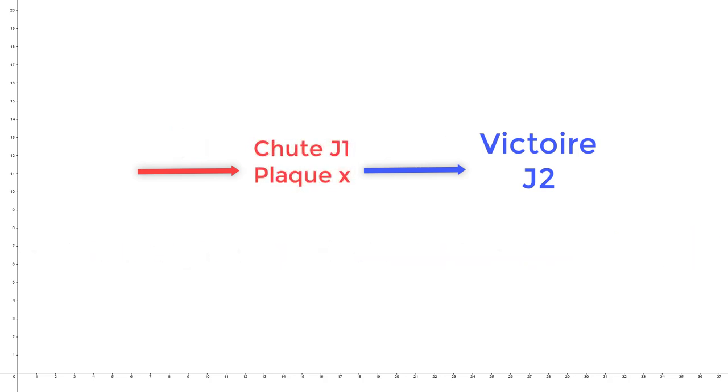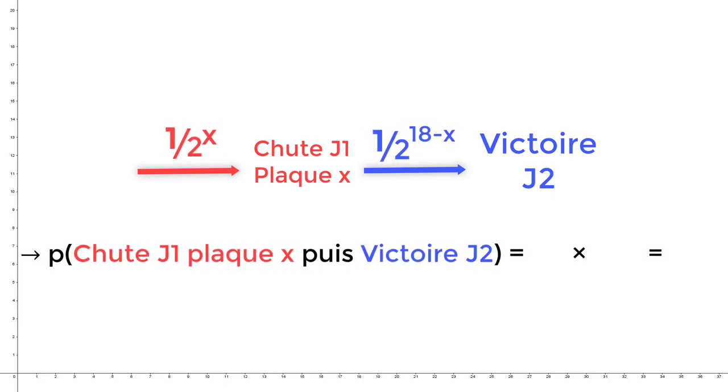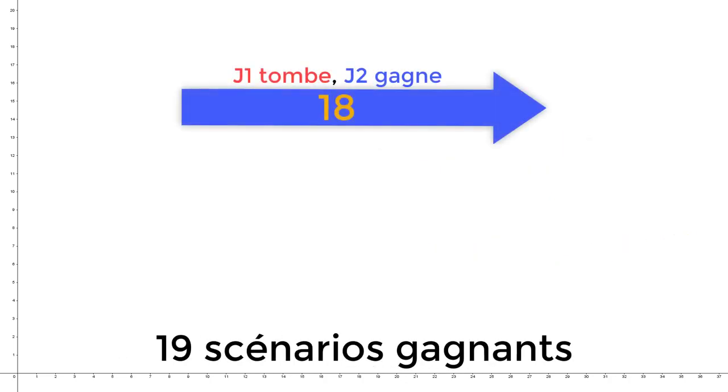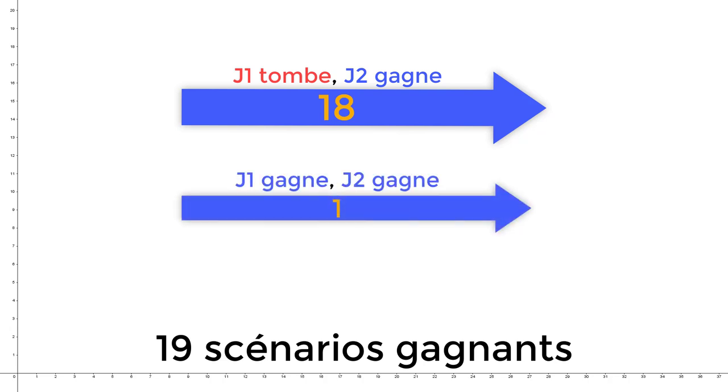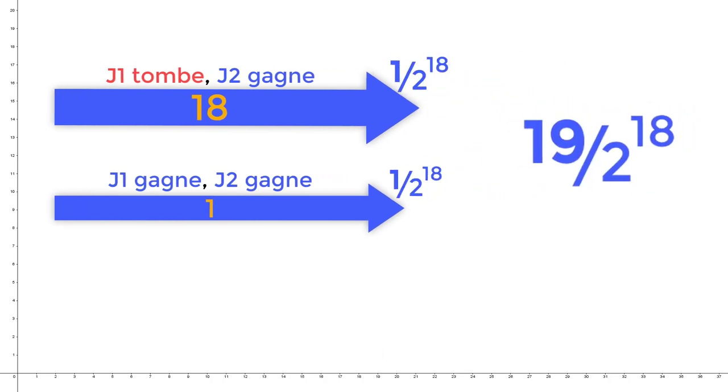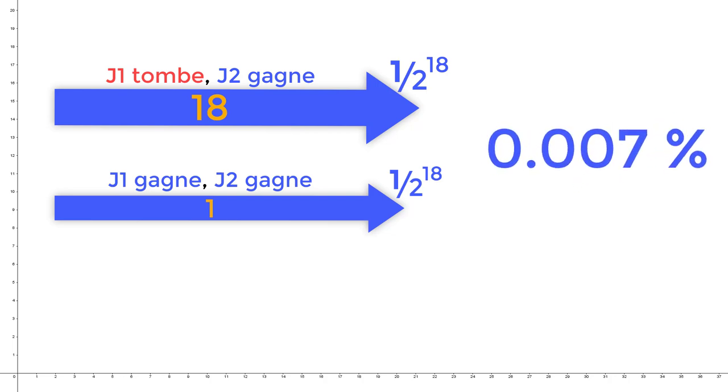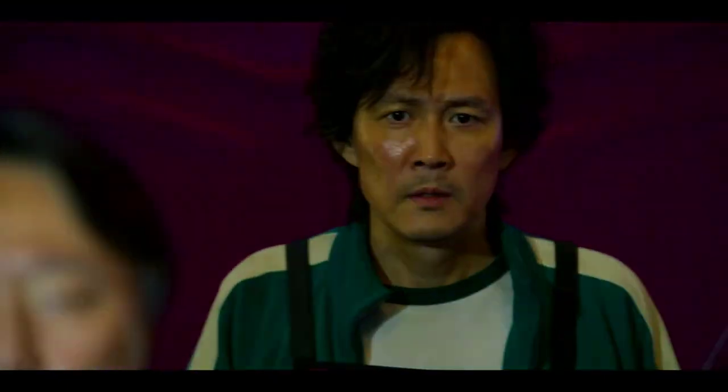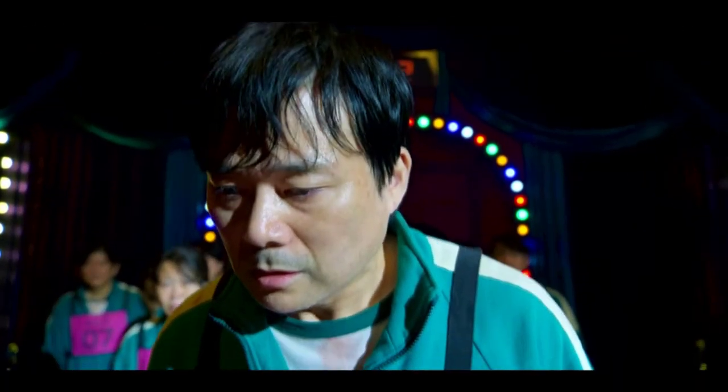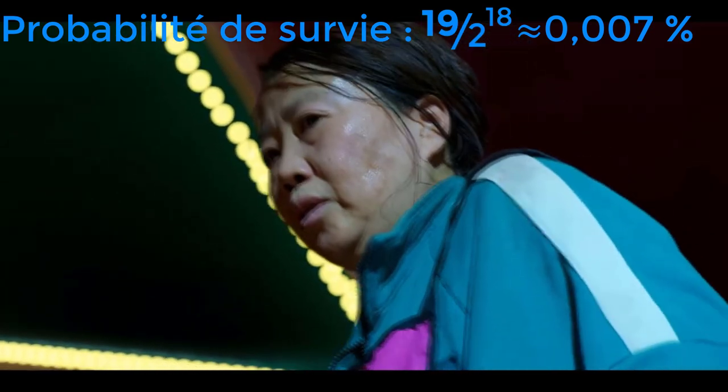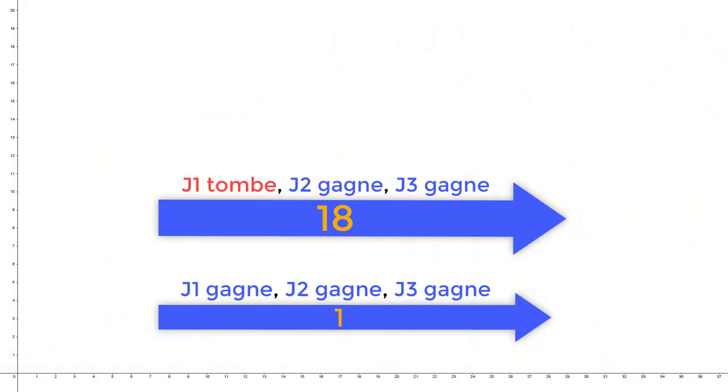De manière générale, l'enchaînement, le candidat numéro 1 tombe à la plaque X, puis la candidate numéro 2 franchit les plaques restantes, est toujours la même, 1 sur 2 puissance 18. Avant que le candidat numéro 1 ne se lance, la numéro 2 peut alors se faire le raisonnement suivant. Il y a pour elle 19 scénarios où elle ne meurt pas, 18 où le candidat numéro 1 tombe et 1 où les deux sont sauvés. Chacun de ces scénarios a la même probabilité de 1 sur 2 puissance 18. Notre candidate numéro 2 a donc 19 chances sur 2 puissance 18, soit approximativement pas beaucoup. On est sur une probabilité de 0,007%.